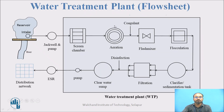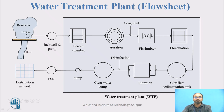Generally, in a flow diagram of a water treatment plant, the coagulant dose is added after the aeration process. If it is an industrial treatment, we provide a flash mixer; otherwise, in a conventional water treatment plant, it goes directly to the flocculation process. So for a city water treatment plant, after aeration, the coagulant dose is added and the water is sent directly to flocculation.